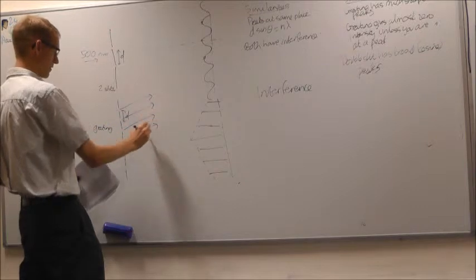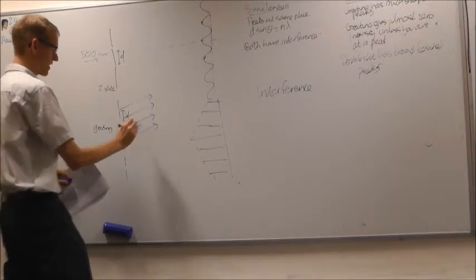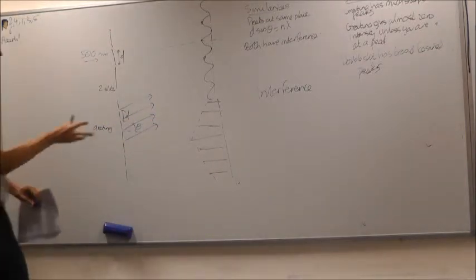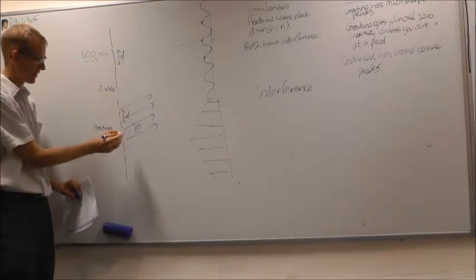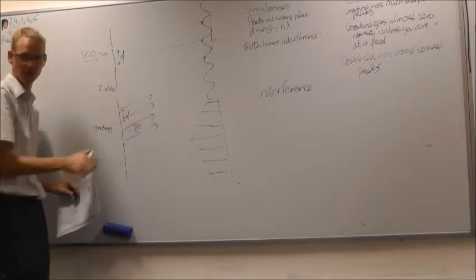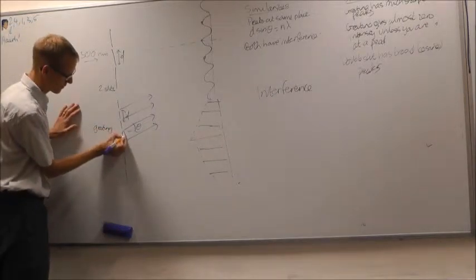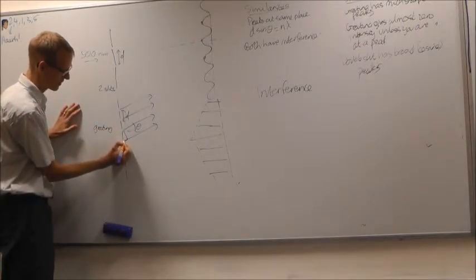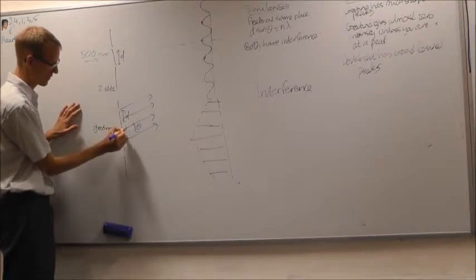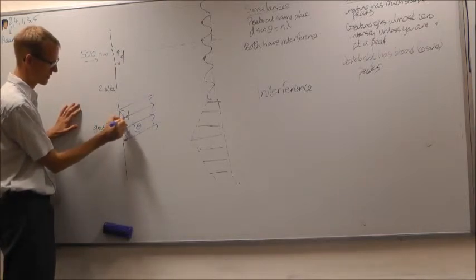So let's say we've got light moving off at an angle theta. To get a peak, all of these have got to interfere constructively. Which means that this distance here, or that distance there, or that distance there.